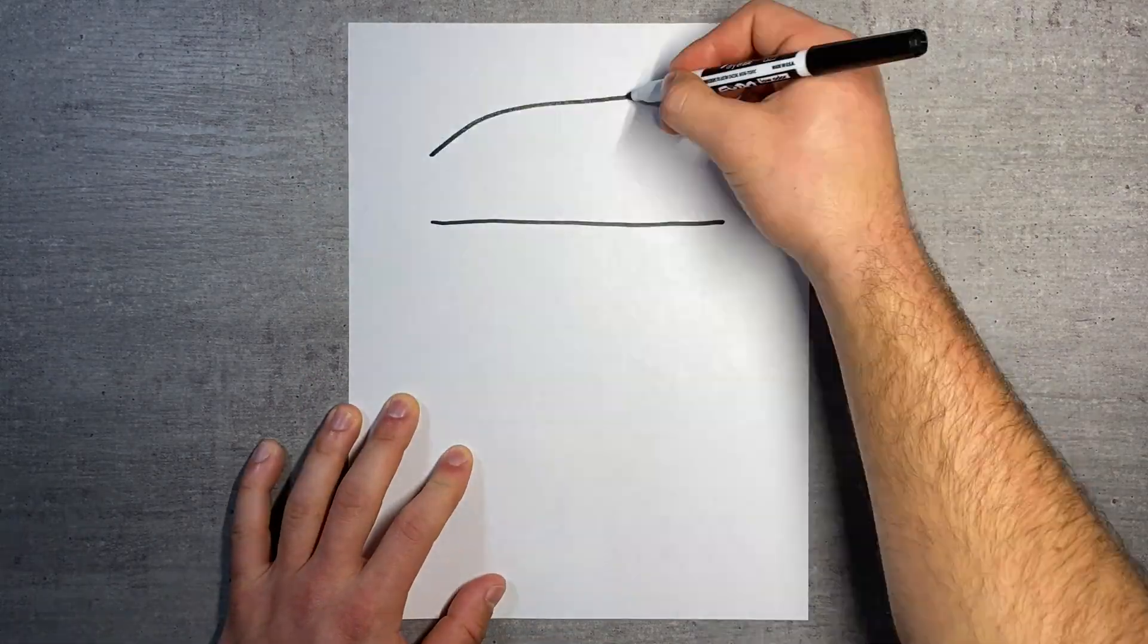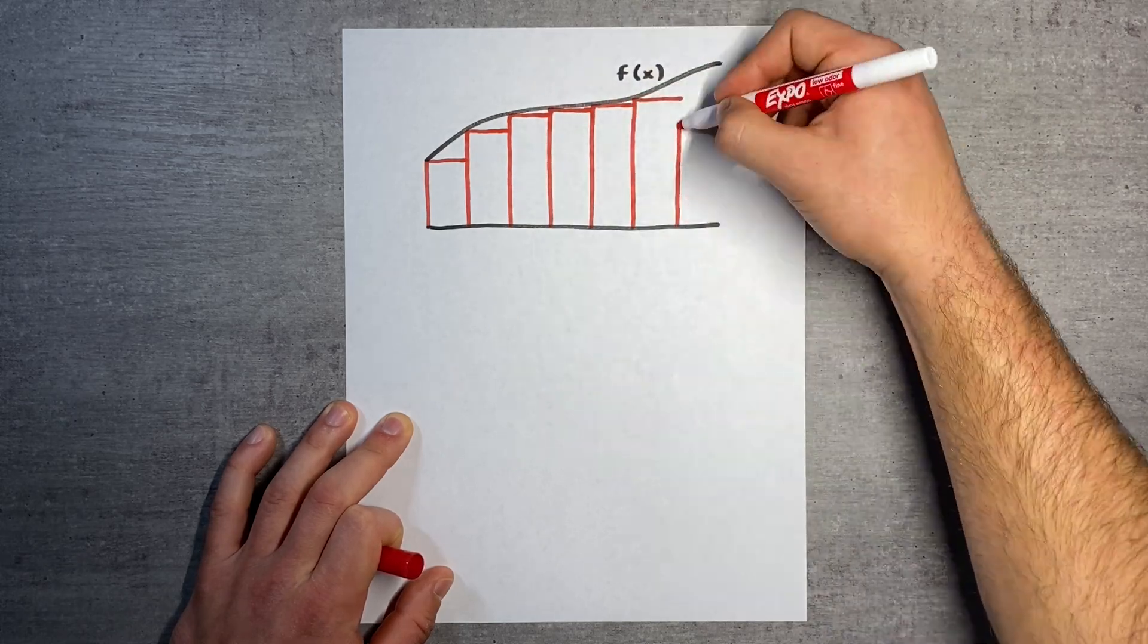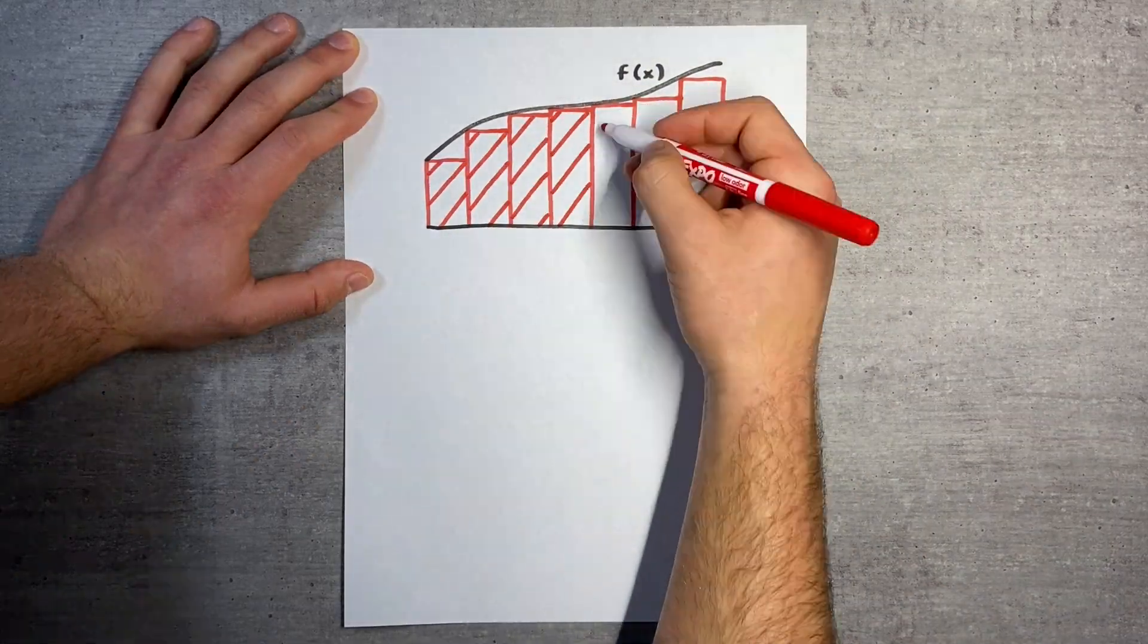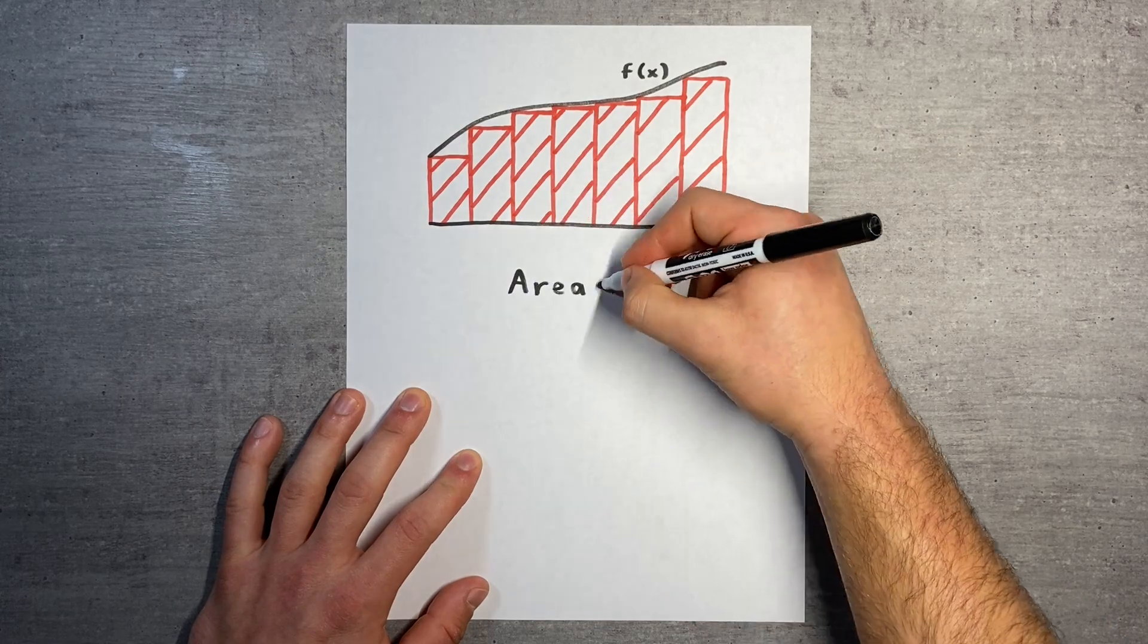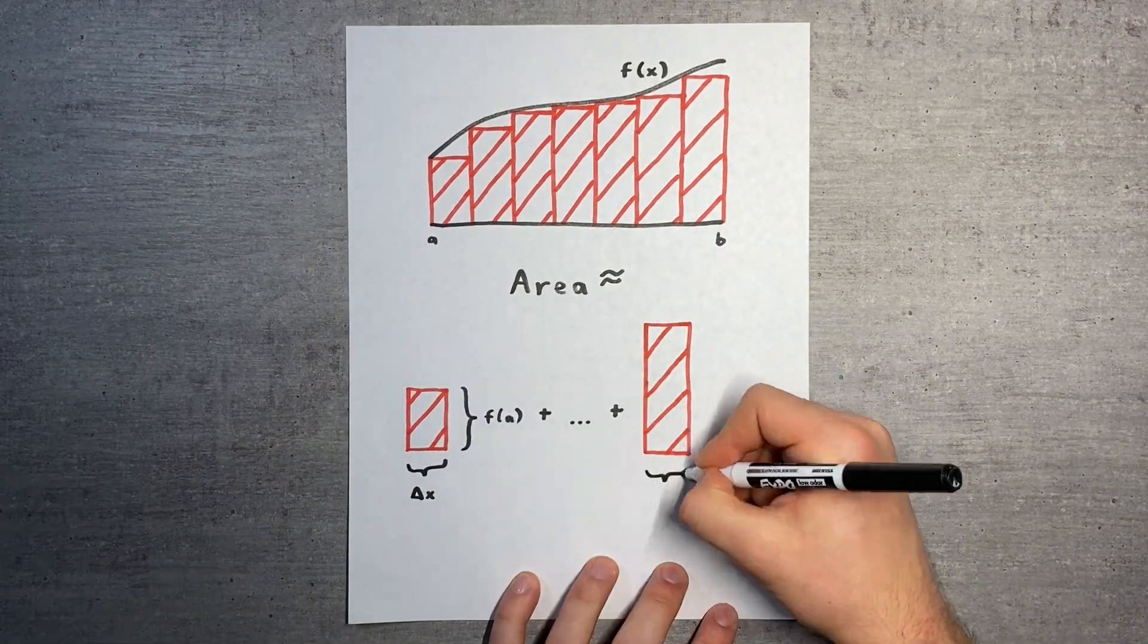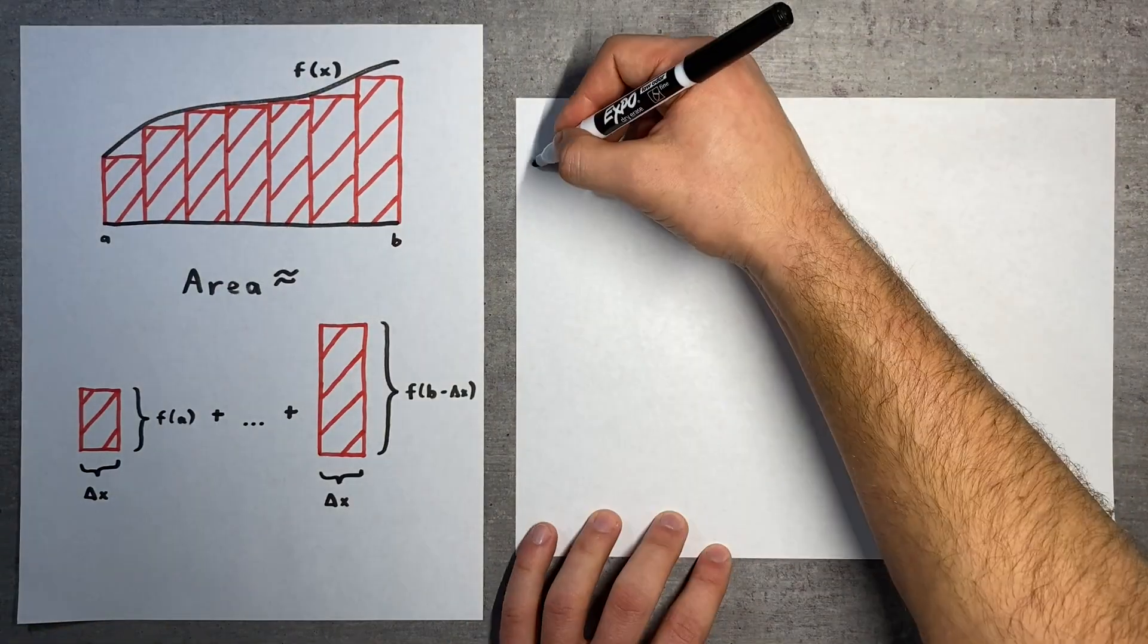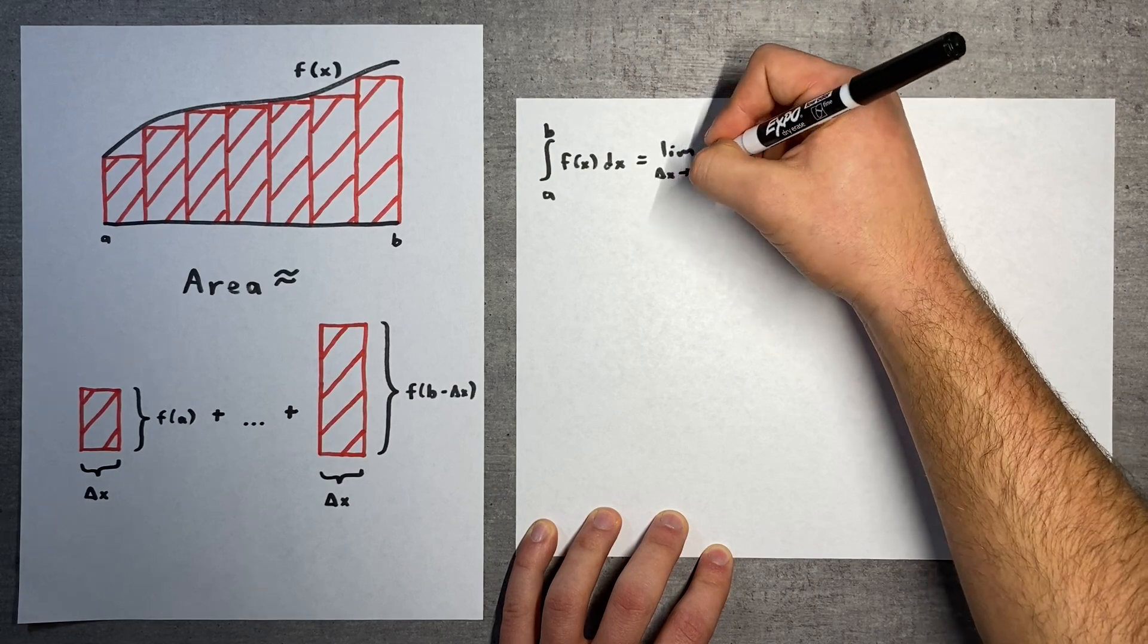Our strategy is the same as the one we used when proving the first fundamental theorem, approximating an area using rectangles. The area under the curve is roughly equal to the sum of the areas of the rectangles, and this approximation gets better and better as delta x approaches zero. This means that the integral is equal to this limit of finer and finer sums.